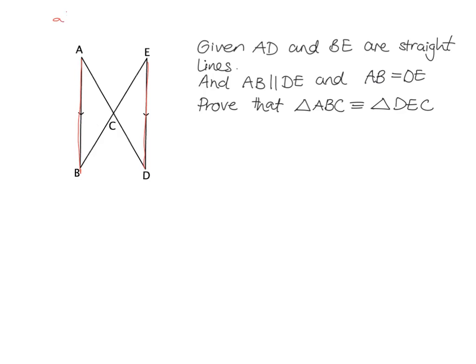I remind myself what parallel lines allow me to talk about. If you remember your parallel lines work: alternate angles are equal, corresponding angles are equal, and co-interior angles add up to 180. So we'll probably be able to use those parallel lines to say something about angles. The other thing we're told is that AB is equal to DE — and they haven't put that in the drawing, so let's mark it in blue so we can see it clearly.